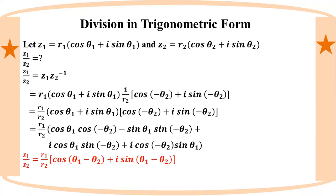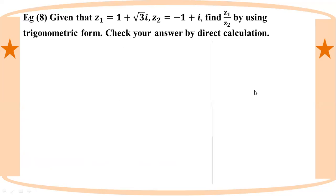Now let's look at the trigonometric form for the division of complex numbers. The result is r1 by r2, into cos(theta 1 minus theta 2) plus i·sin(theta 1 minus theta 2). This is the formula for division using trigonometric form. You can use this to check your answer and verify your calculation.